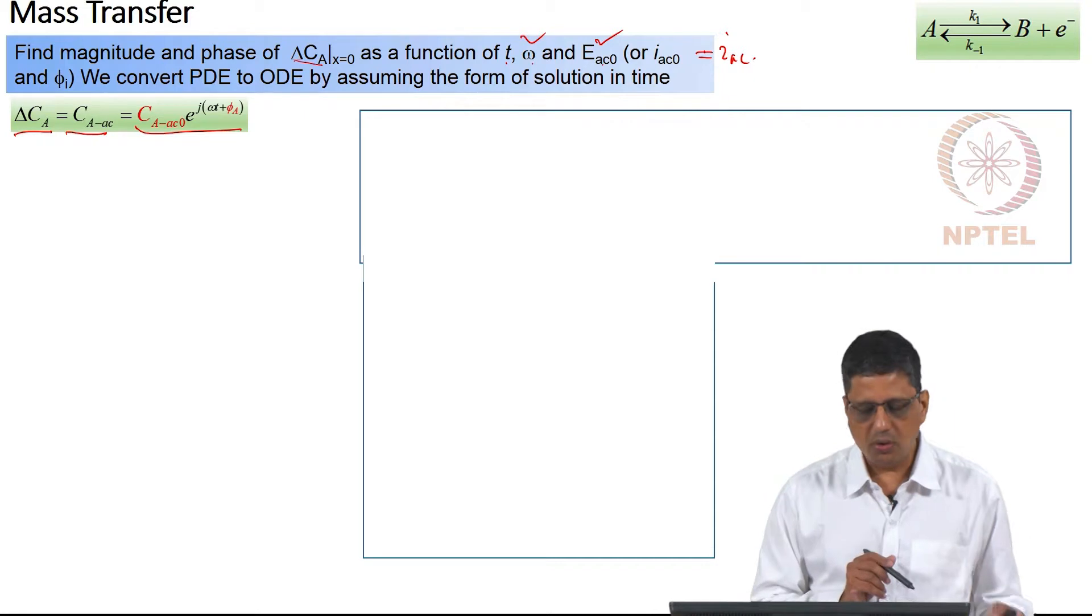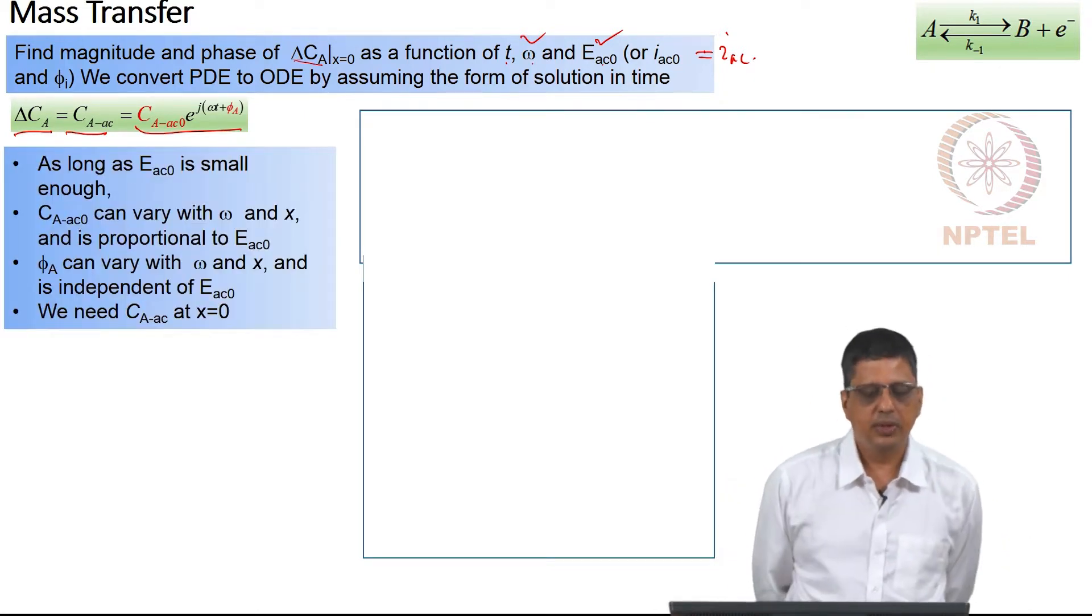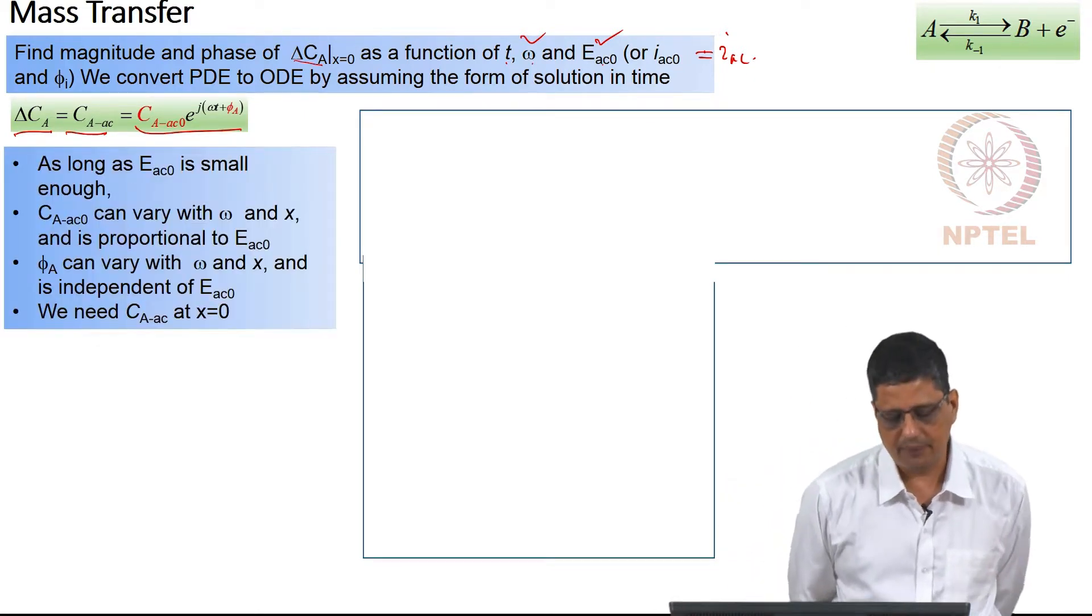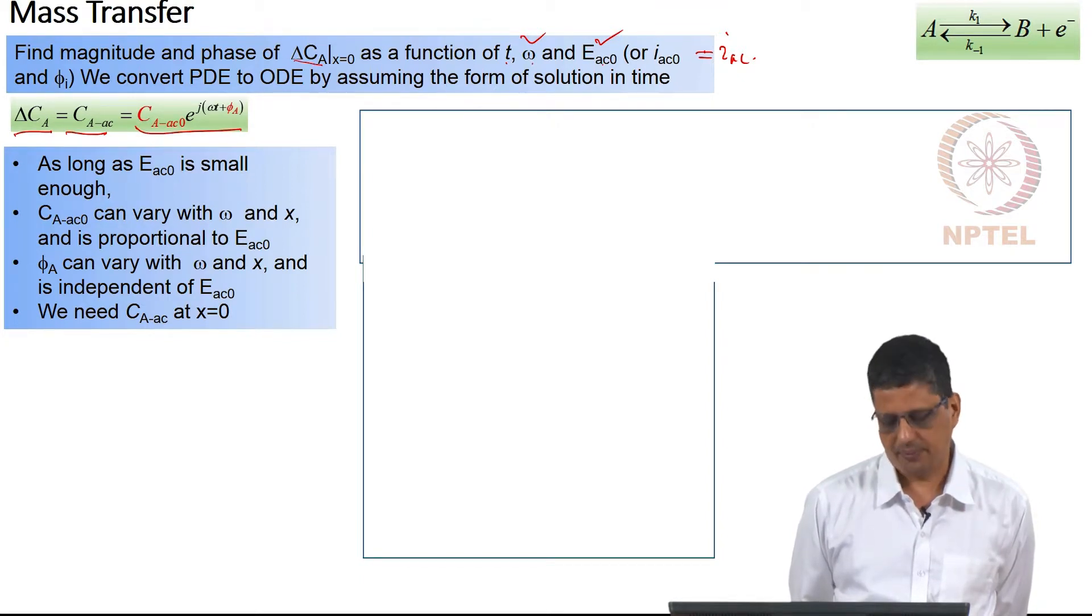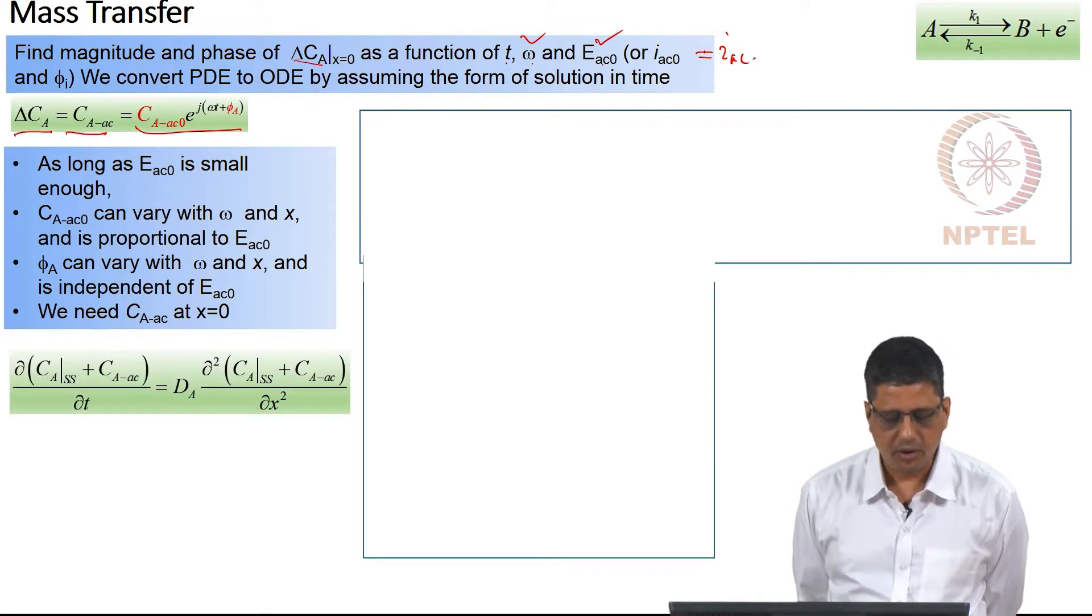We will convert the PDE to ODE by assuming that solution is this form. Now this is true as long as E_AC_0 is small. Concentration of A, magnitude of the fluctuation can vary with omega, vary with location. And as long as E_AC_0 is small, it is proportional to AC_0. Just like current I_AC_0 is going to be proportional to AC_0 as long as E_AC_0 is small. Now the phase can vary with this. It will be independent of AC_0 and we need to calculate concentration of A, the AC part at x=0.